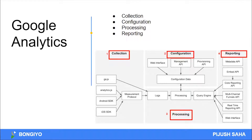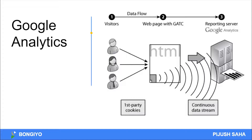Now let's see this. We have a big picture. We have a visitor. A visitor's website has a data flow. The web page with GATC — meaning Google Analytics tracking code — is fired. If Google Analytics tracking code is fired, we have a reporting server. Now we have the first part.